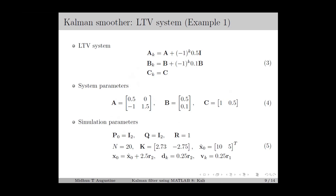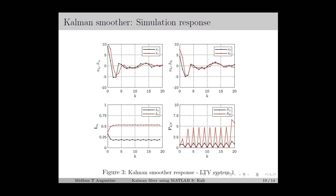Next, we discuss the simulation of the linear time-varying system, for which the system matrix, input matrix, and output matrix are chosen as in equations number 3 and 4. The simulation parameters are chosen as in equation number 5, similar to the Kalman filter example. For the linear time-varying system, we obtain the simulation response of the Kalman Smoother as in Figure 3. We can observe that the Kalman Smoother estimates the states with sufficient accuracy, but the diagonal elements of Lsk and Pk|N do not converge, because of the time-varying nature of Ak and Bk.